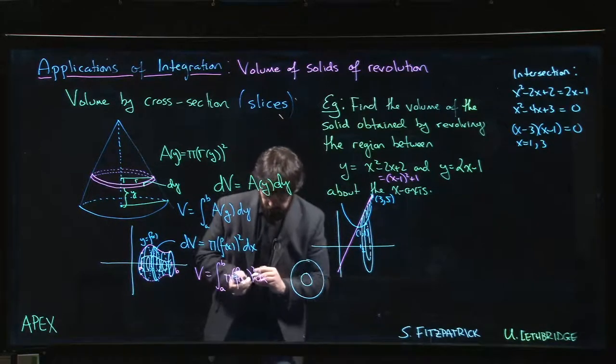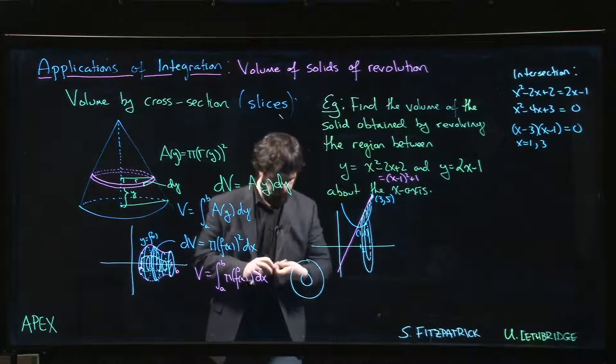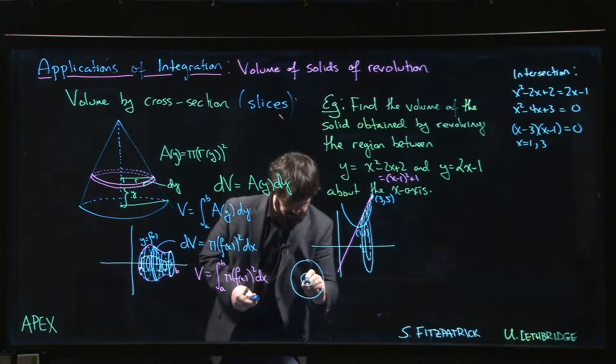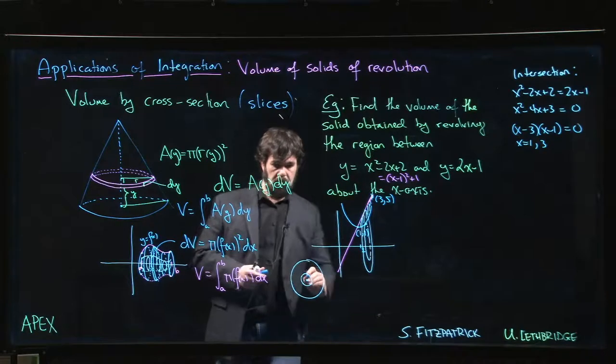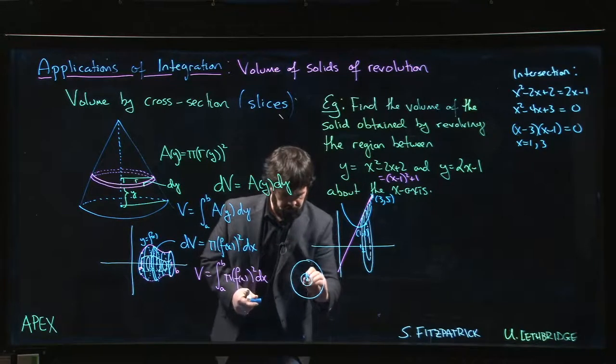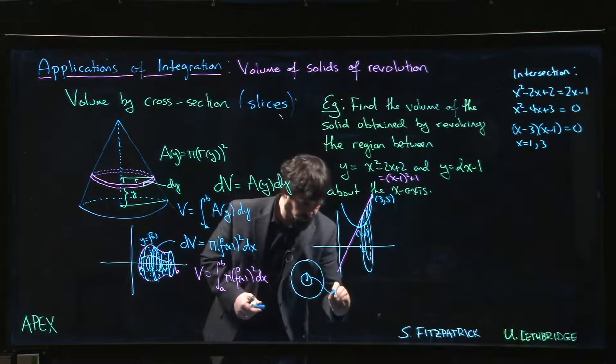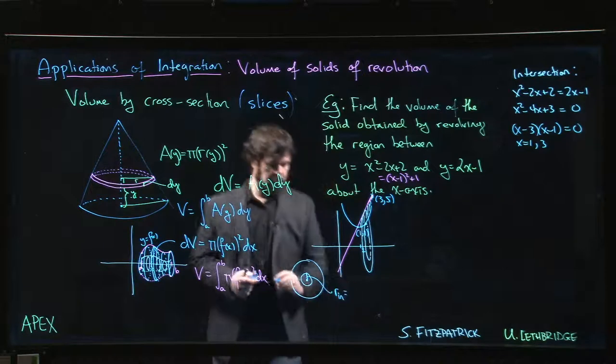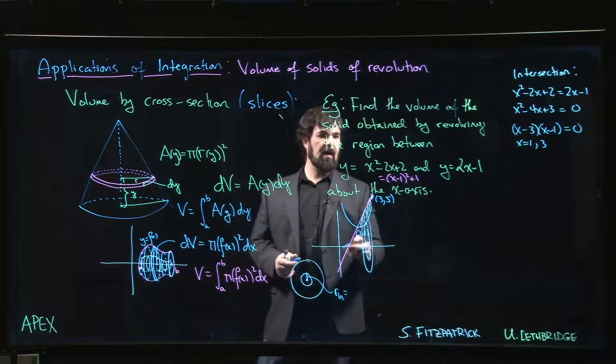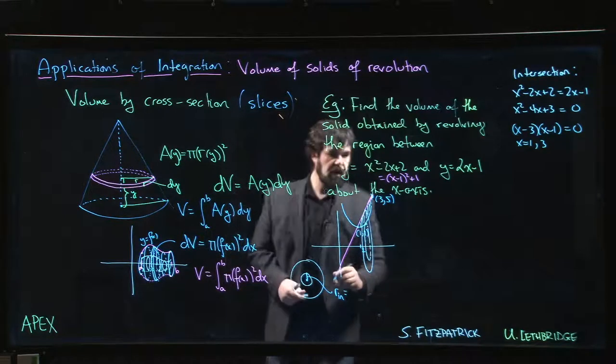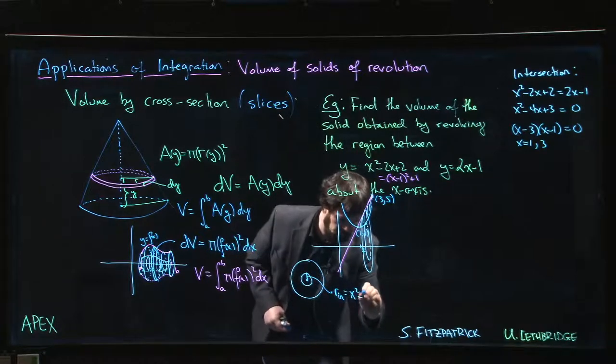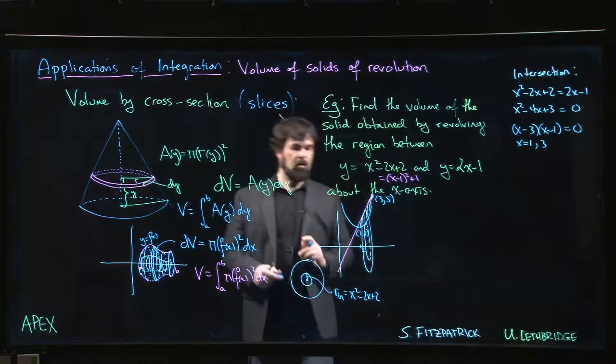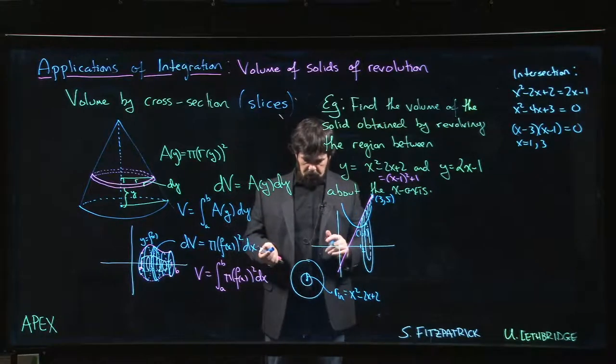And the x-axis is kind of here coming out or into the board. So that inner radius, well, that's just your lower function. In our case, the inner radius is x squared minus 2x plus 2.